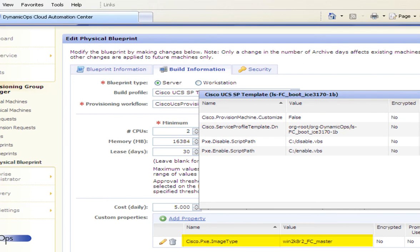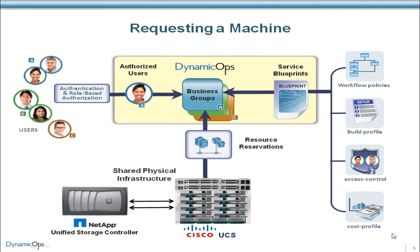In addition, the blueprint also includes the master LUN that will be FlexCloned to deploy the OS image to the blade. The first step is for Mary to initiate the provisioning process by requesting a specific blueprint from a catalog of available physical and virtual machine blueprints.